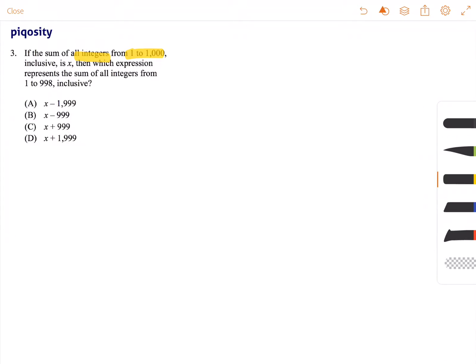So 1, 2, 3, 0, negative 1, negative 2, negative 3. Inclusive is x, then which expression represents the sum of all integers from 1 to 998 inclusive?